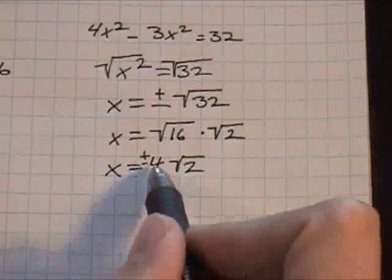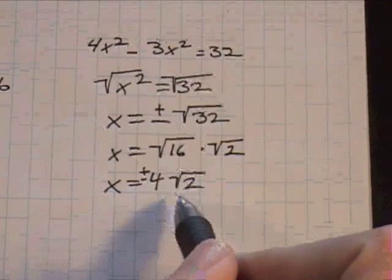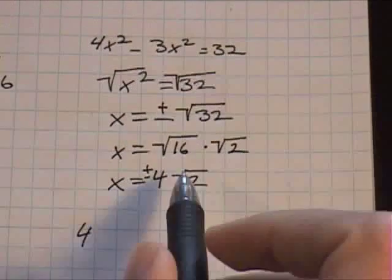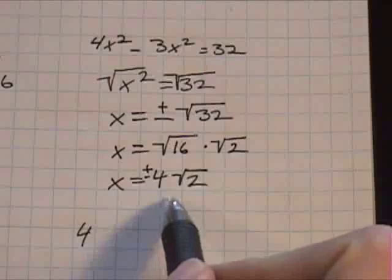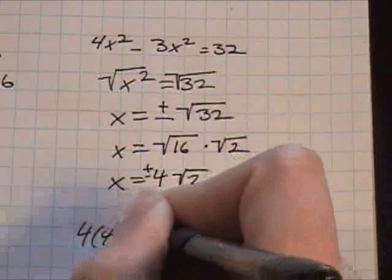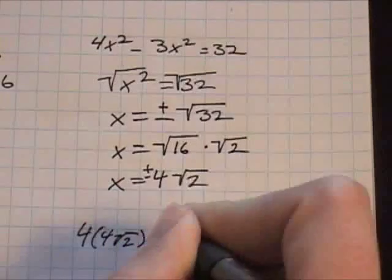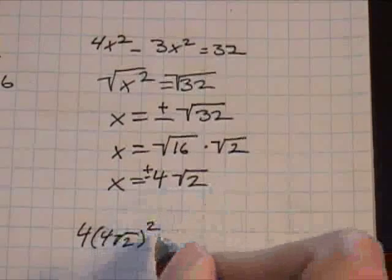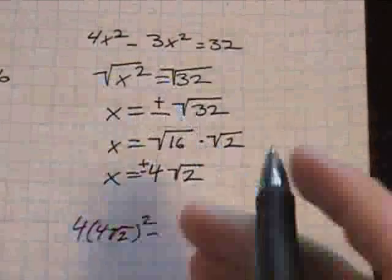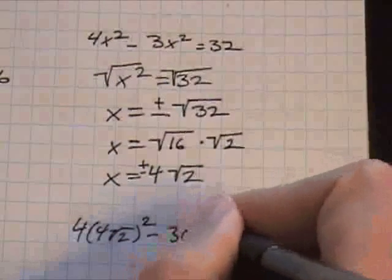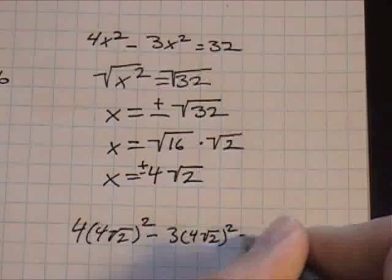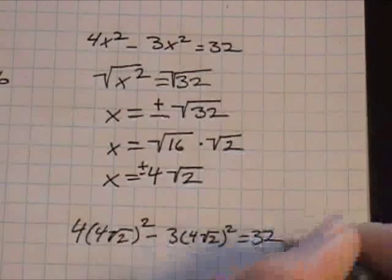So, first one. Let's go ahead and use the positive version of this. It's 4x. And this is x now. The positive version of this. So, 4 square root of 2. And that's squared. Minus 3 times 4 square root of 2 raised to the second power. And that equals 32.